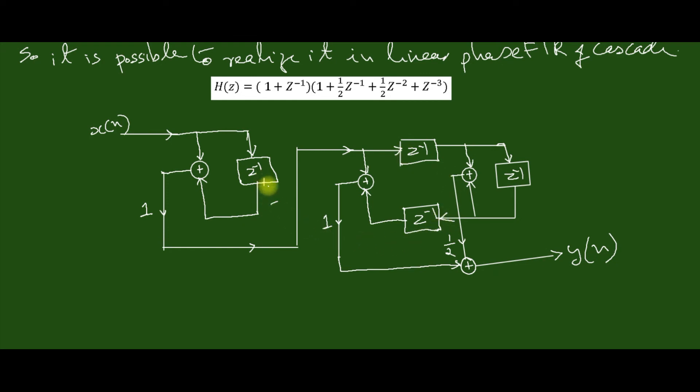You have drawn the minimum number of multiplier structure for the given system function using the linear phase FIR filter form. Thank you.